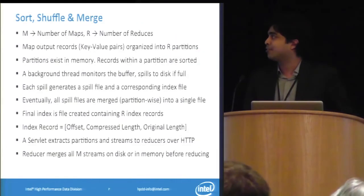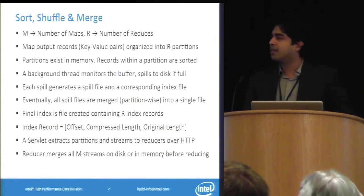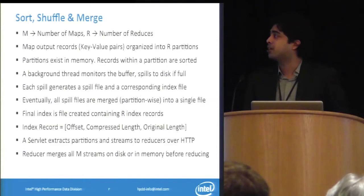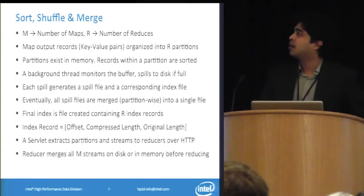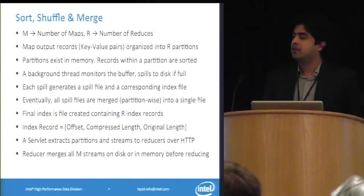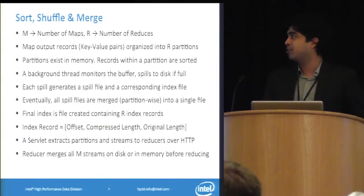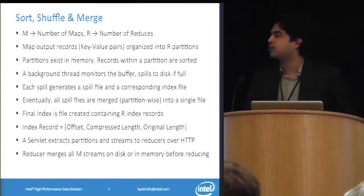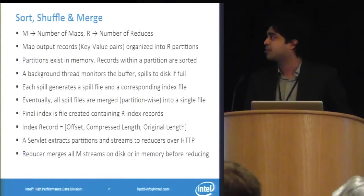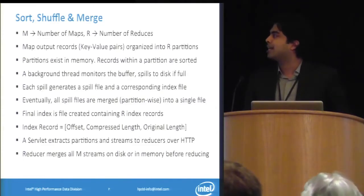The main bottleneck in Hadoop is the shuffle phase. What essentially happens is the output of each mapper is sorted, and the sorted output is divided into partitions — the number of partitions equals the number of reducers. Each partition is then streamed over HTTP to each reducer. If you use Lustre, which is a shared file system, the mapper outputs are available to all reducers, so the HTTP streaming phase becomes redundant. We wanted to completely eliminate it.